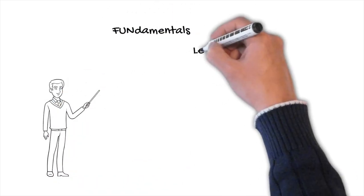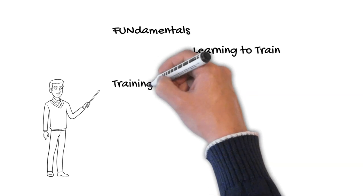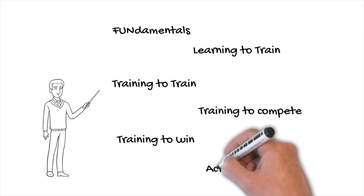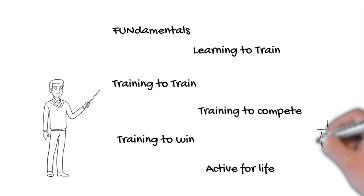The framework consists of six stages: fundamental, learning to train, training to train, training to compete, training to win, and active for life. Let's look into more detail.